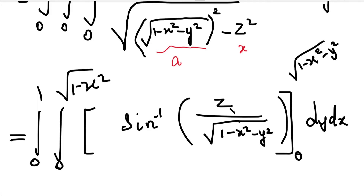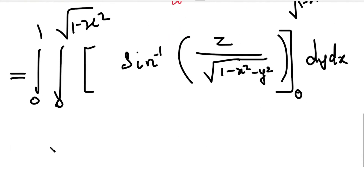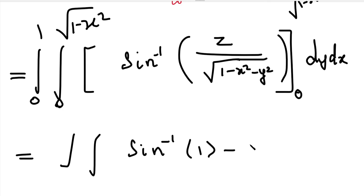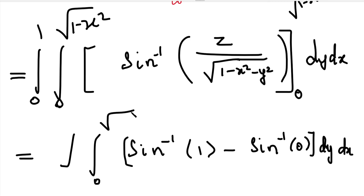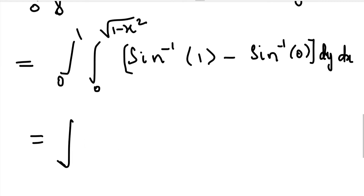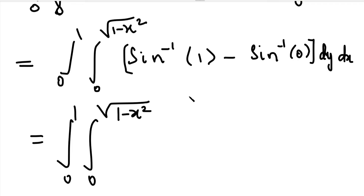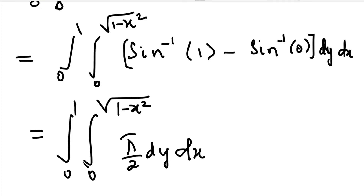Applying the upper limit, numerator and denominator cancel, giving sin inverse 1. Applying the lower limit, substituting 0, we get sin inverse 0, which equals 0. So the result is the double integral of (sin inverse 1 minus sin inverse 0) dy dx, with y limit 0 to root of (1 minus x square) and x limit 0 to 1. Since sin inverse 1 equals pi by 2, this simplifies to pi by 2 times the double integral.